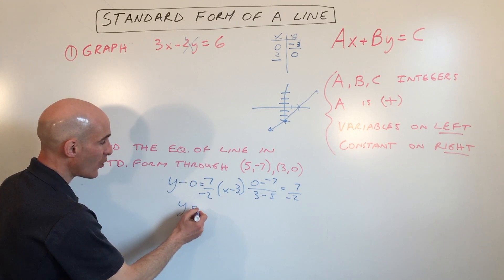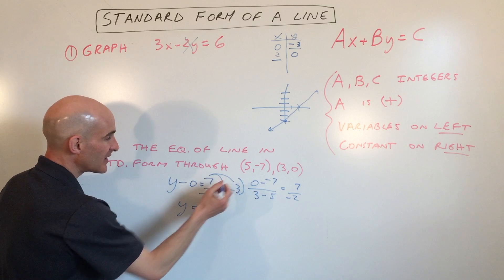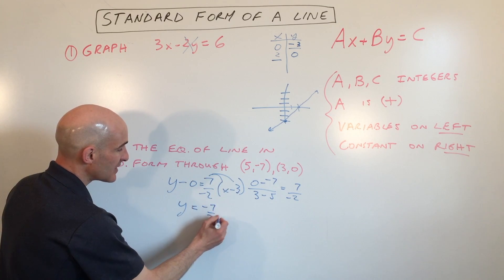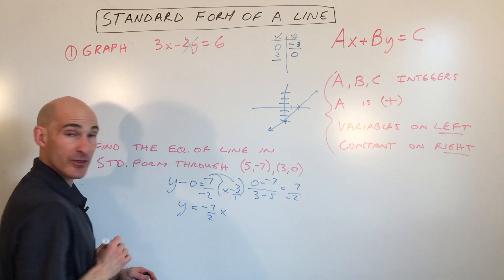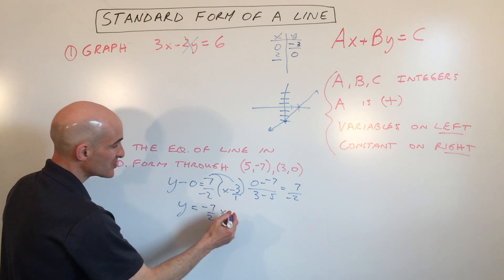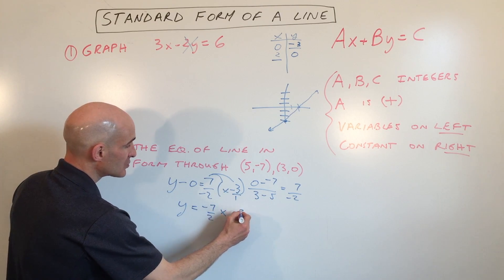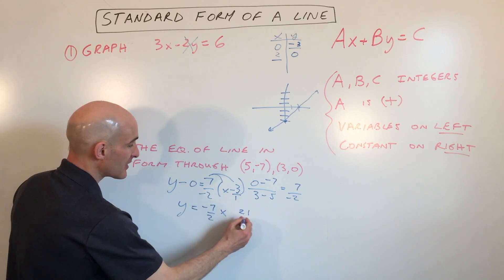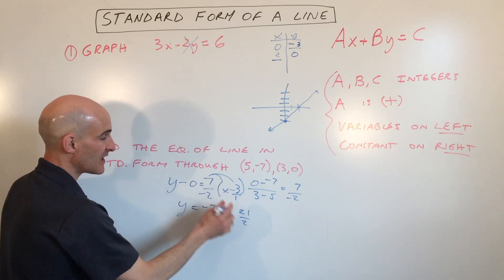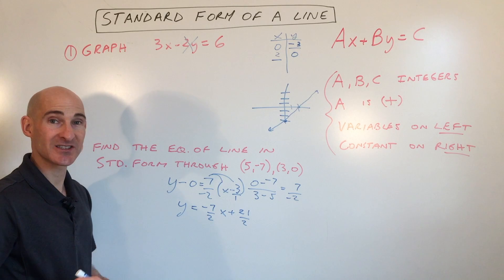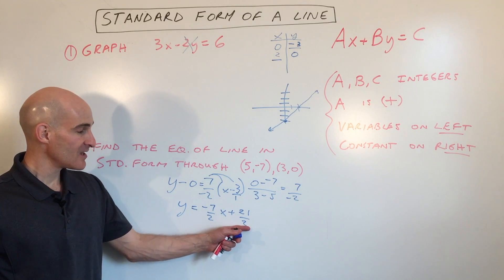So y minus 0 is just y. I'm going to distribute the negative 7 halves. So that's going to give us negative 7 halves x. 3 is like 3 over 1, so I'm going to multiply the numerators together—that gives us 21. The denominators together give us 2. And a negative times a negative is a positive, so I'm going to write that as a plus. So far so good.